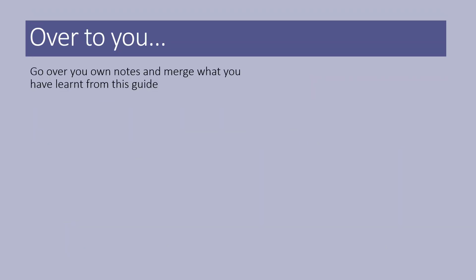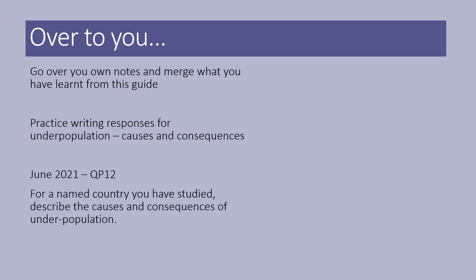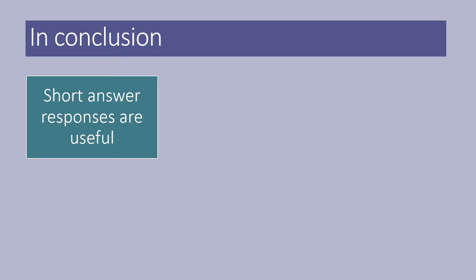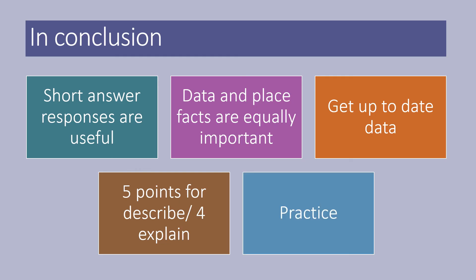It's over to you. Go over your notes and merge what you've learned from this guide. Practice writing responses for underpopulation causes and consequences — here's a question that could be useful for you with the mark scheme. In conclusion, short answer responses are incredibly useful for seven markers because the points they use are typically something you can apply to your case study. It means you can go away and find that place-specific reference or population data required. Make sure you get as up-to-date data as possible. Five points for each describe question, four points for each explain question, and do practice.